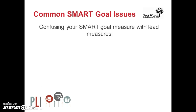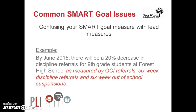Confusing your SMART goal measures with lead measures is the last common issue with writing goals. In the example, all of the lead measures to be tracked are listed in the goal. The example reads: 'By June 2015, there will be a 20% decrease in discipline referrals for 9th grade students at Forest High School, as measured by OCI referrals, 6-week discipline referrals, and 6-week out-of-school suspensions.' The best action is to rewrite the goal and remove the OCI referrals, 6-week discipline referrals, and 6-week out-of-school suspensions.